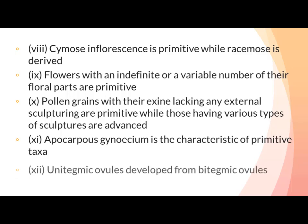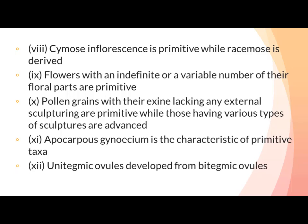Unitegmic ovules develop from bitegmic ovules, meaning that unitegmic ovules are an advanced characteristic while bitegmic ovules are primitive. Unitegmic refers to an ovule with one integument, and bitegmic refers to an ovule with two integuments.